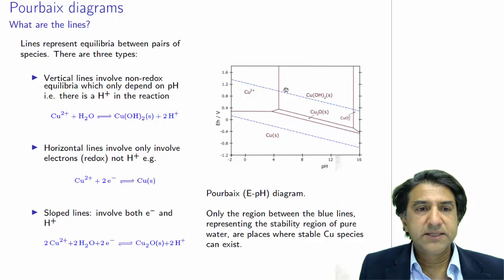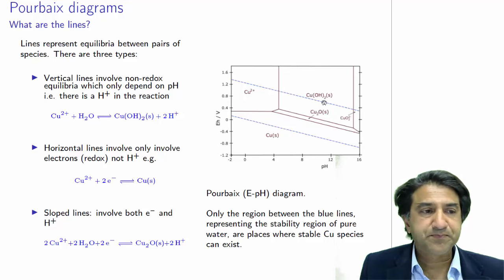Here's a vertical line here, separating Cu2+ and copper oxide solid. So the vertical line represents a set of conditions where both of these species can be simultaneously stable. In other words, they're in equilibrium. This is an equilibrium line. Neither one nor the other is stable.